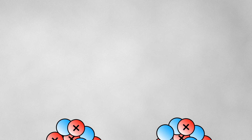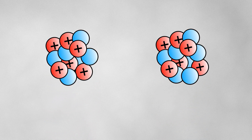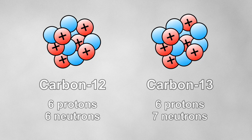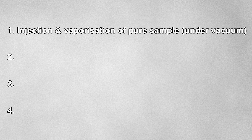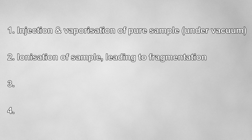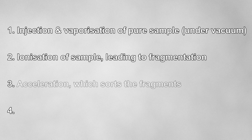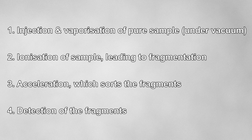Mass spectrometry can also be used to determine the masses and abundances of different isotopes. There are many types of mass spectrometry but they all follow the same basic principle. A small amount of a pure sample is injected into a mass spectrometer which is attached to a vacuum pump to keep the whole thing under vacuum and to help the sample to be vaporized. The sample will then undergo ionization which leads to fragmentation of the molecule, acceleration which sorts the fragments, and finally detection of the fragments.